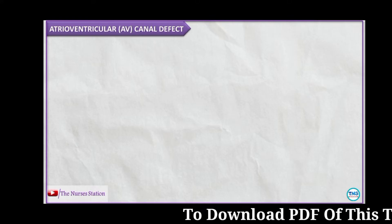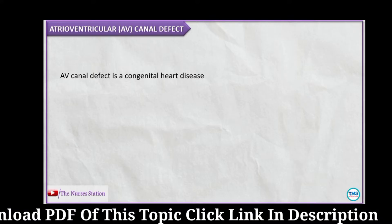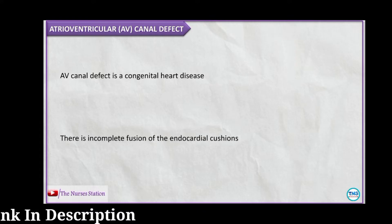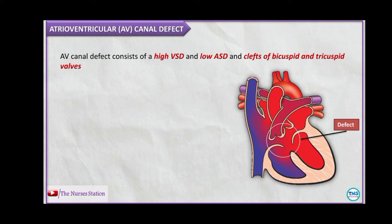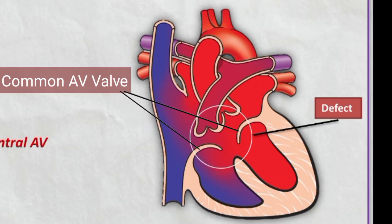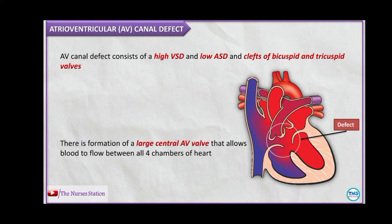The AV canal defect is a congenital heart disease, meaning it is present from birth. It results from incomplete fusion of the endocardial cushions — a subset of cells in the developing heart tube that give rise to the heart's primitive valves and septa, critical to forming a four-chambered heart. The defect is characterized by a high ventricular septal defect continuous with a low atrial septal defect, along with clefts of the bicuspid and tricuspid valves, forming a large central AV valve that allows blood to flow between all four chambers.